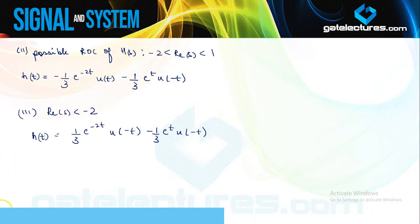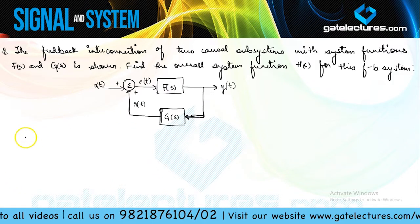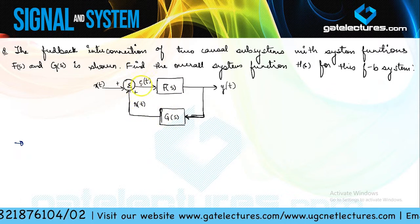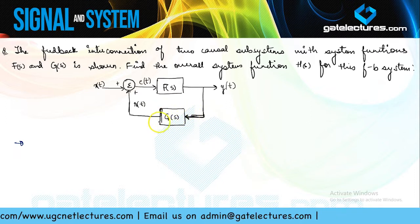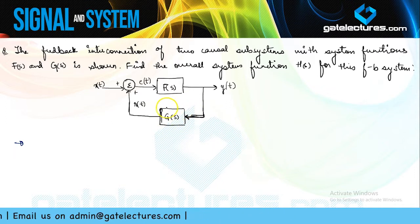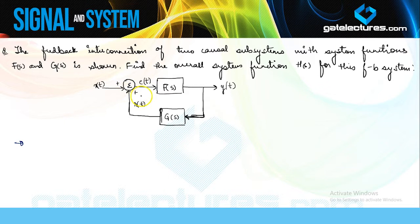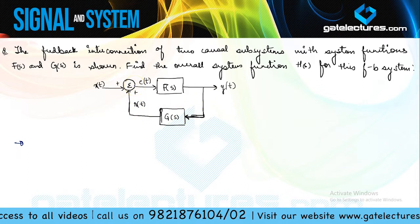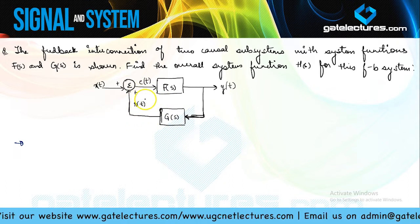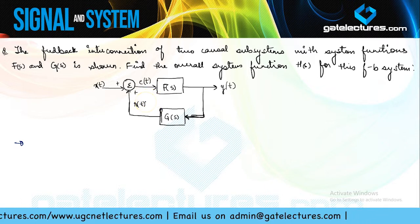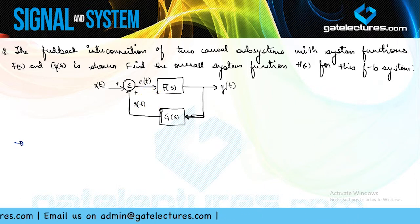Now look at one more question. I have been given a feedback system. Feedback means taking some portion of the output, multiplying it by a feedback factor, and applying it along with the input. Sometimes the complete output is applied as feedback; sometimes only a portion is. This negative feedback is generally used to make the system stable.